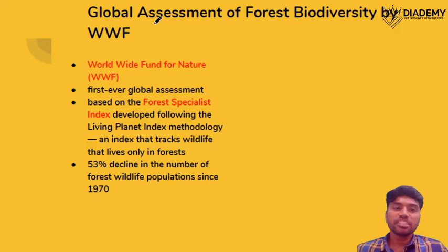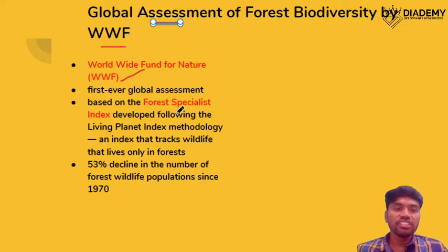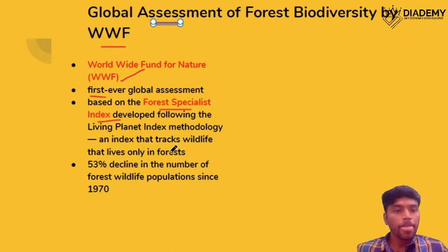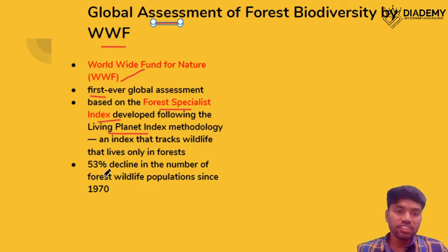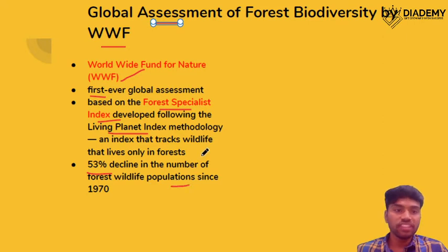The next topic is the Global Assessment of Forest Biodiversity given by WWF. This is the first ever global assessment of forest biodiversity, based on the Forest Specialist Index. It follows the Living Planet Index methodology. According to this assessment, there has been a 53% decline in the number of forest wildlife populations — this is very important.